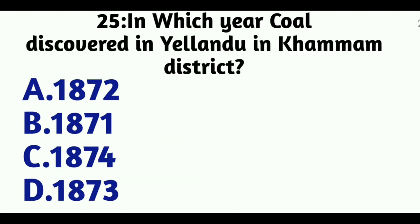Question 25: In which year was coal discovered in Illandhu in Komaram Bheem District? Option A: 1872, Option B: 1871, Option C: 1874, Option D: 1873. The answer is Option B, 1871.